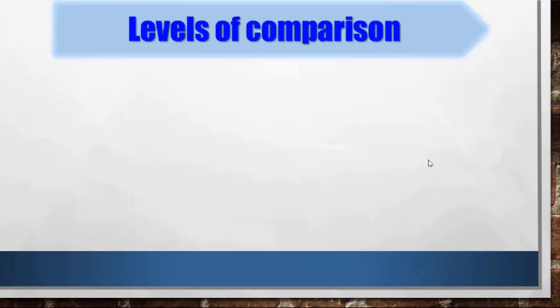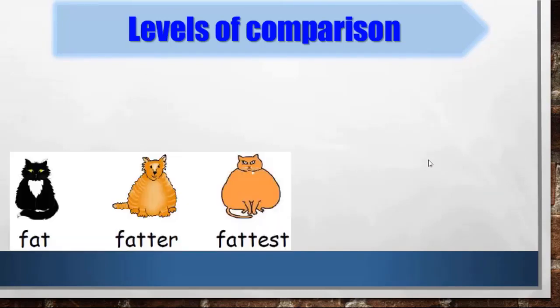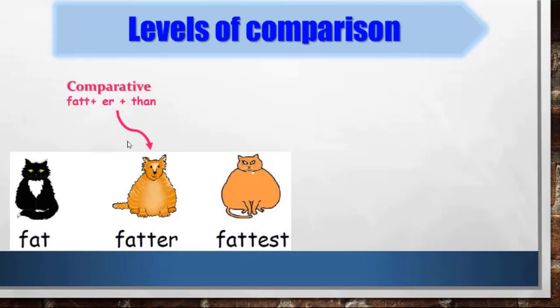Let's check the lesson. We have levels of comparison. Here we have three cats — are they the same or different? They are different in colors and size, and we will focus on size. The black one is fat, but the orange one is fatter. To compare between two cats, we use the comparative: 'fatter than'. I add '-er than' because I am comparing between two cats.